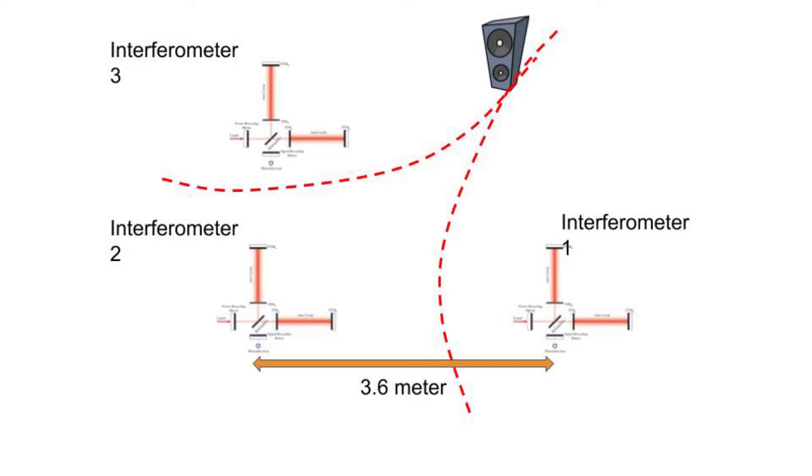Remember, to find a location for 2D case, we need 3 interferometers. And for 3D case, we need 4 interferometers. But why?